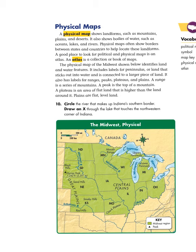Some states, like Indiana, have to show certain physical features, like the bottom of the state, which is gnarly because of the Ohio River. A physical map shows landforms such as mountains, plains, and deserts. It also shows bodies of water such as oceans, lakes, and rivers. Physical maps often show borders between states and countries to help locate these landforms.